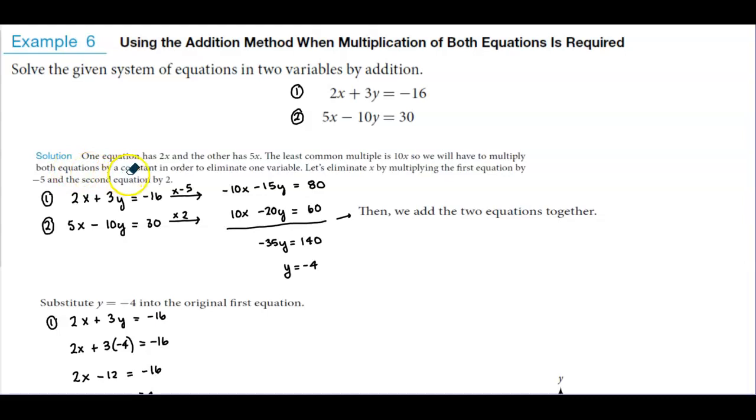One equation has 2x and the other has 5x. The least common multiple is 10x, so we will have to multiply both equations by a constant in order to eliminate one variable. We can eliminate x by multiplying the first equation by negative 5 and the second equation by 2. It doesn't necessarily mean we have to do that for x - we can also find the opposites for 3y and negative 10y. It doesn't matter which variable you choose. In this scenario, we're choosing x to eliminate.